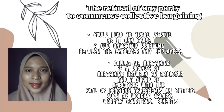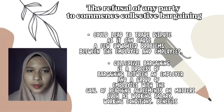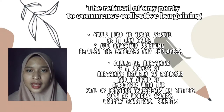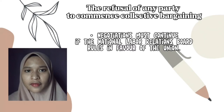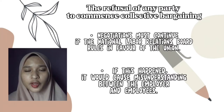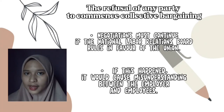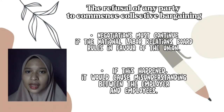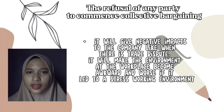For instance, any terms that the employer gave to the union may be implemented unilaterally by the employer. Employers may enforce their last offer to the union if the National Labor Relations Board finds that an impasse has been reached. Negotiations must continue if the National Labor Relations Board rules in favor of the union. If this happens, it would cause misunderstanding between employer and employees, and the employees might feel that the employer refused to hear and accept their rights. Refusing to commence collective bargaining will give negative impacts to the company and may lead to a stressed working environment.